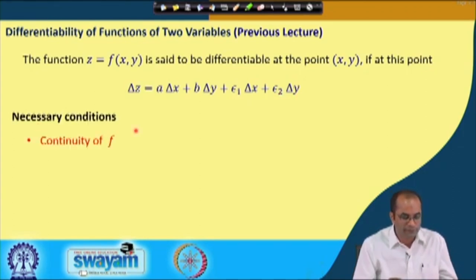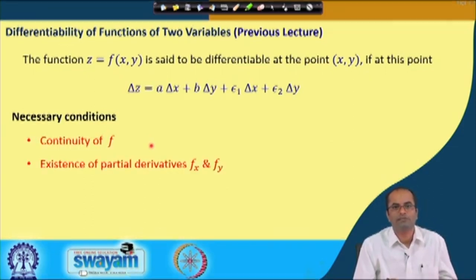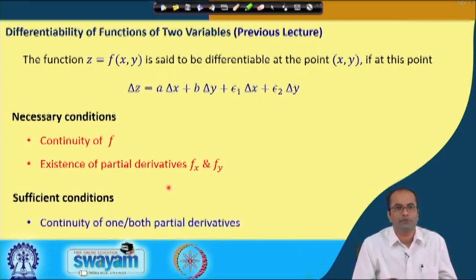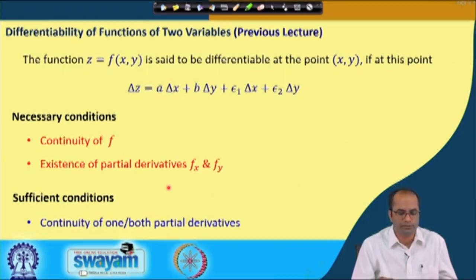The necessary conditions we have learned are that continuity of f is necessary for differentiability, and also the existence of partial derivatives f_x and f_y is necessary. We have also seen the sufficient conditions: the continuity of one or both partial derivatives is sufficient for differentiability of functions of two variables.